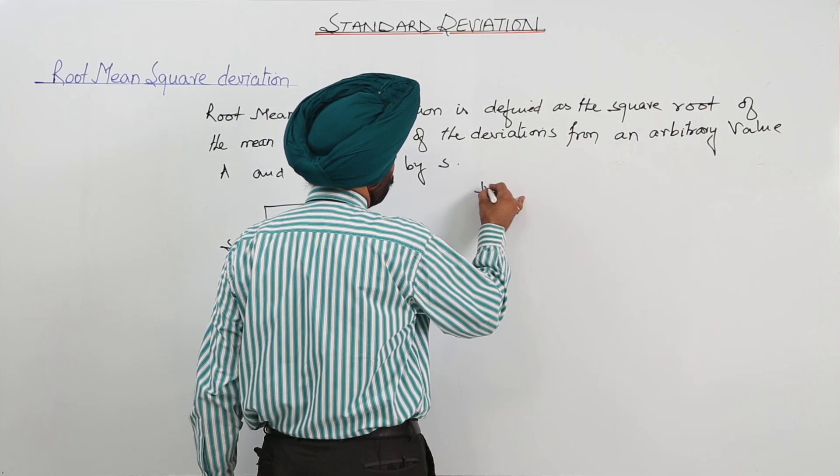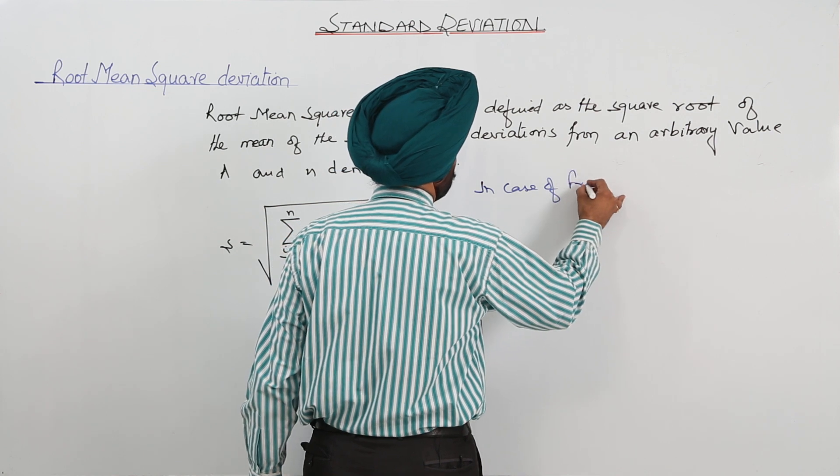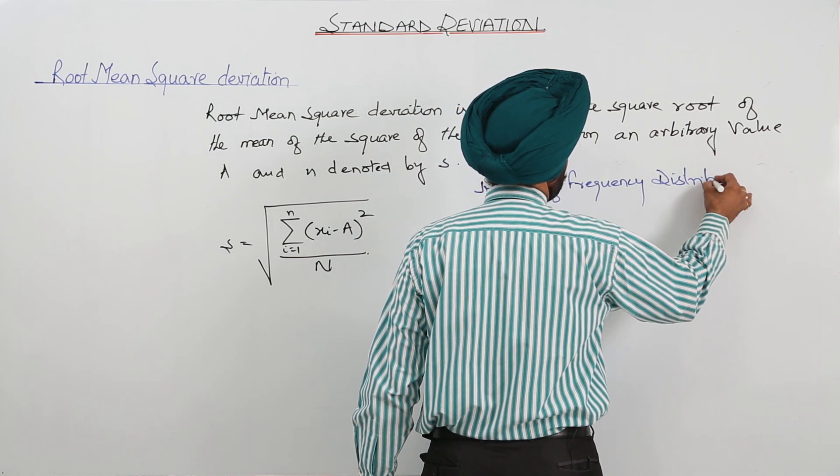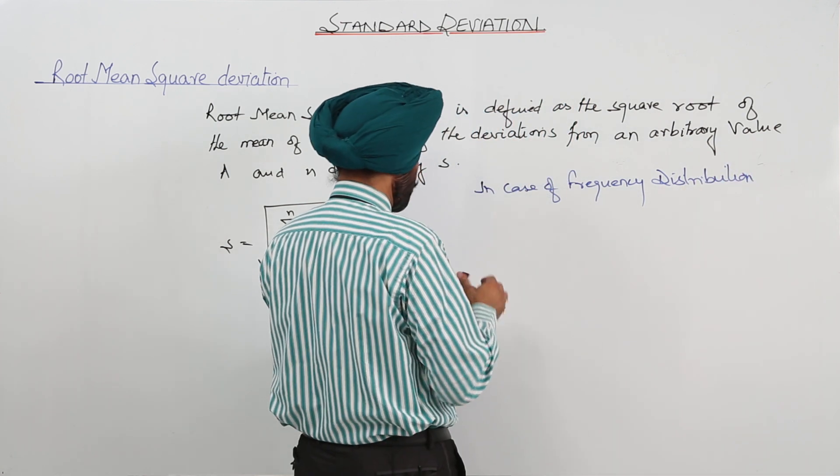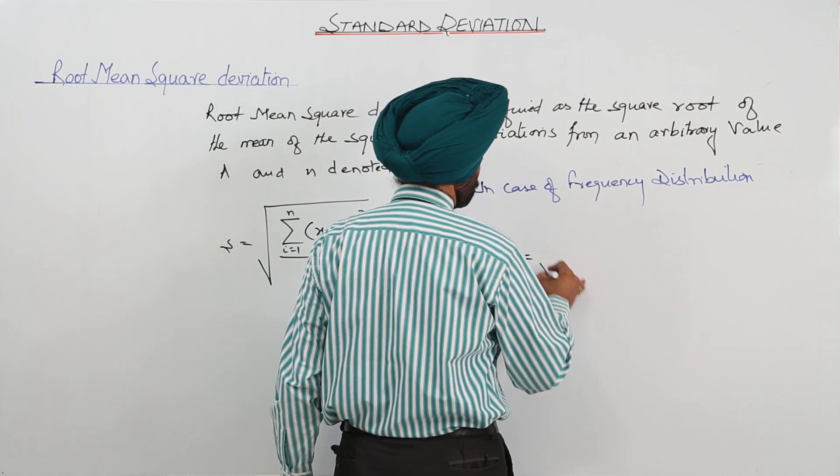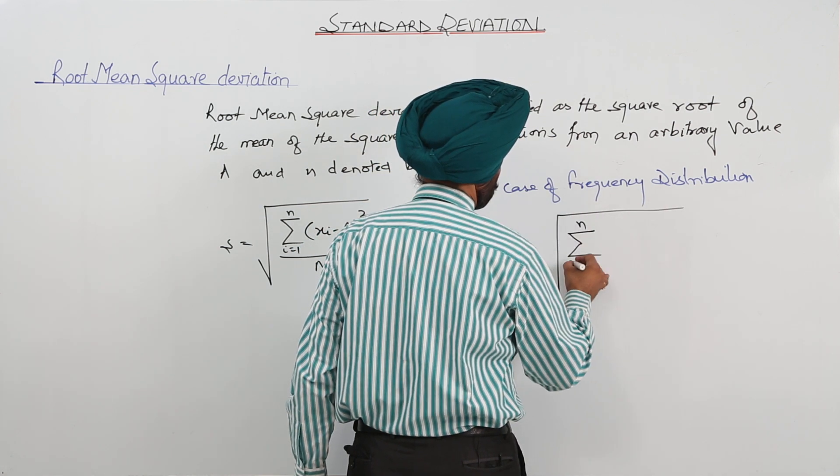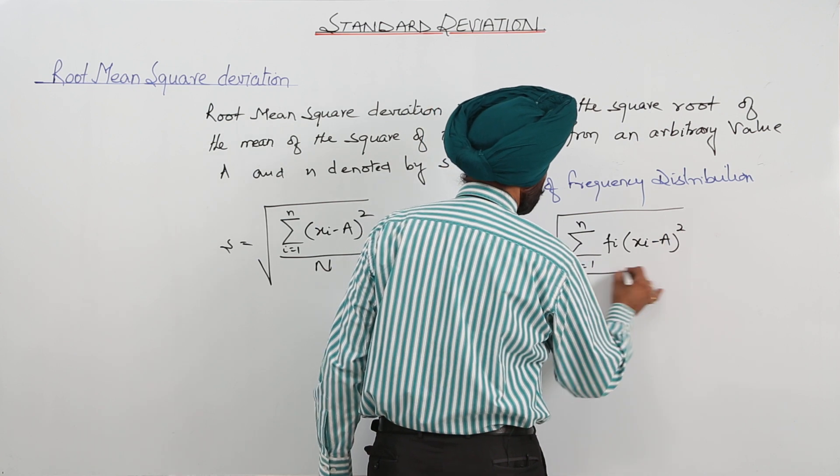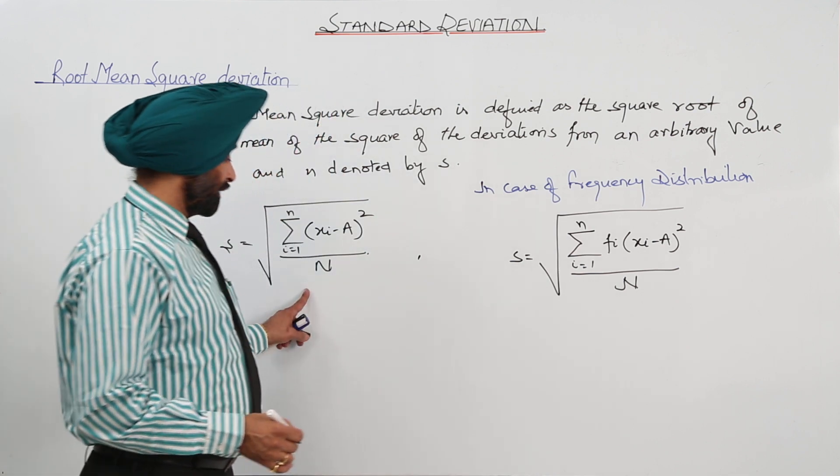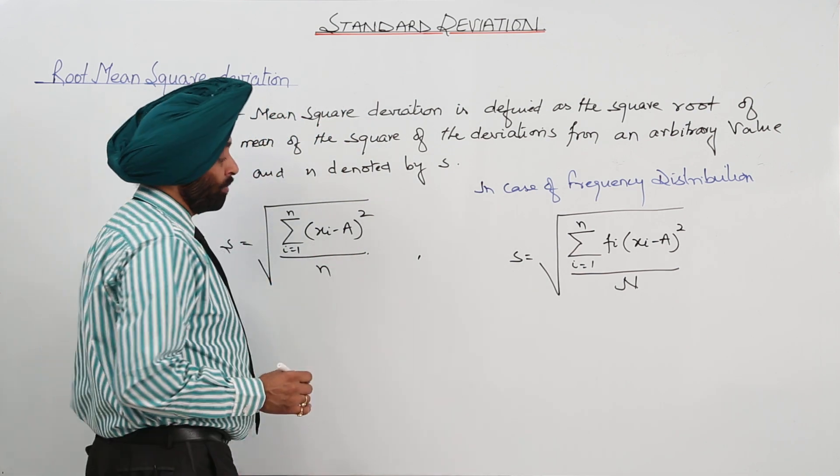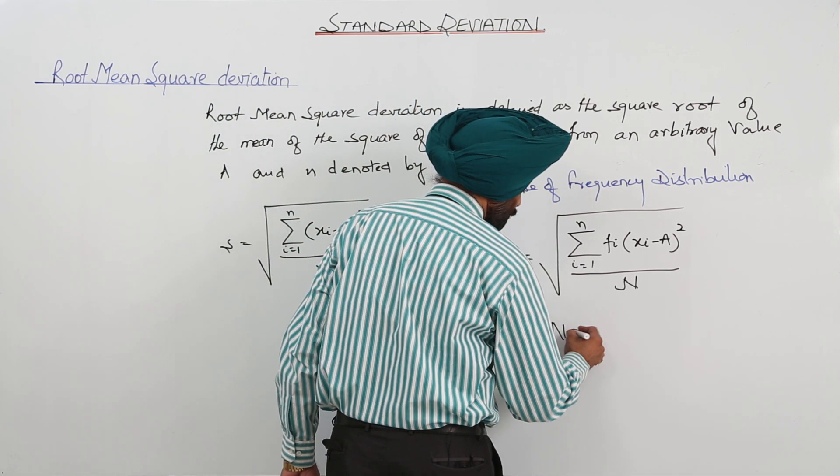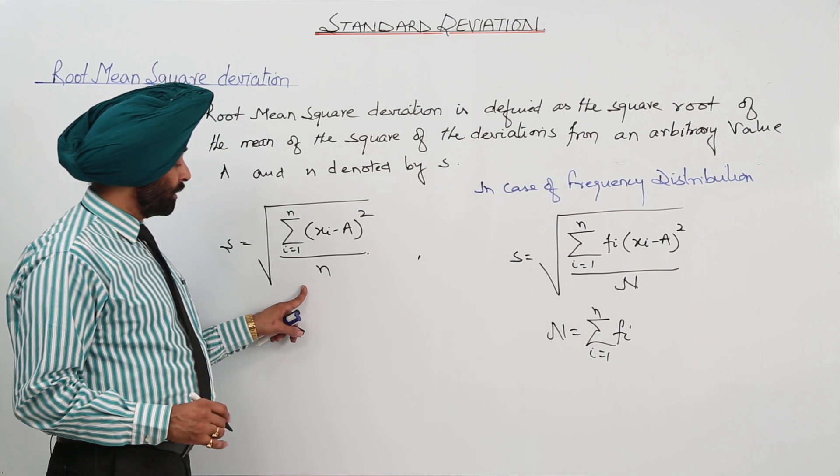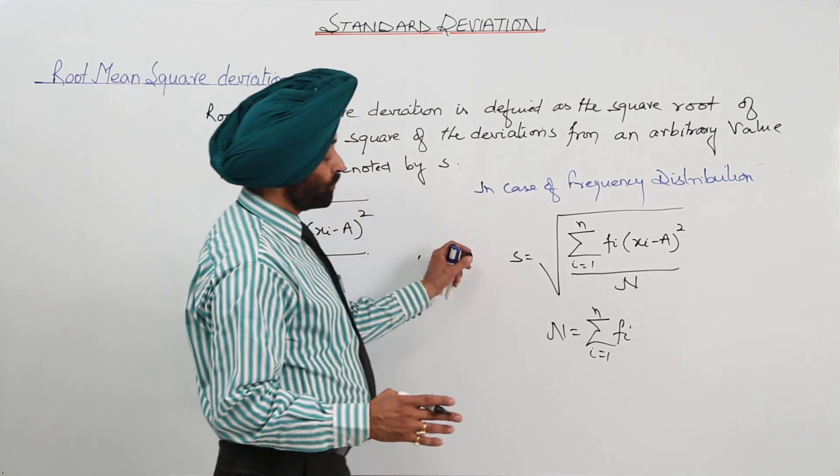Now, in case of frequency distribution, the formula can be written as s is equal to square root of summation fi times xi minus a whole square divided by N. This N, sorry, here it should be a small n. And here should be a capital N. Capital N is summation for fi, all the frequency. Here it is small n. This is the number of terms. This is for the raw data, this is for the frequency distribution. So this is the formula for the root mean squared deviations.